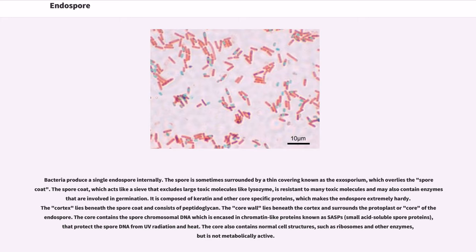The cortex lies beneath the spore coat and consists of peptidoglycan. The core wall lies beneath the cortex and surrounds the protoplast or core of the endospore. The core contains the spore chromosomal DNA which is encased in chromatin-like proteins known as SASPs, that protect the spore DNA from UV radiation and heat. The core also contains normal cell structures, such as ribosomes and other enzymes, but is not metabolically active.